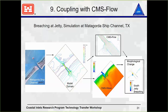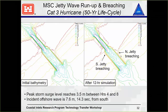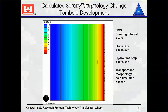With that extra wave energy, there is more energy in the flow model to pick up sediment and move it around. Here's a case of the Matagorda Shipping Channel — after running 12 hours, we were able to see some breaching through on both the north and south side with a Category 3 storm. Looking at these answers in an oblique view, we can see a little bit more about how these breaches were and the energy coming through with scour on the sides.